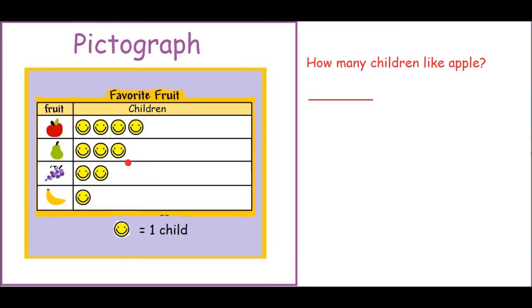We will now answer some questions about this pictograph. So let's look at how many children like the fruits. One, two, three, four children. How many children like apple? What if I were to ask the question: how many children like pear?